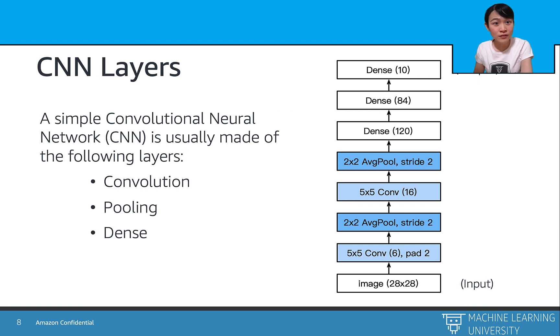We can also stack the convolutional pooling and dense layers together. And that will be a convolutional neural network, which means the CNN. Here is a simple CNN on our right-hand side, which is the LeNet architecture. And we will introduce more about that in the next section.